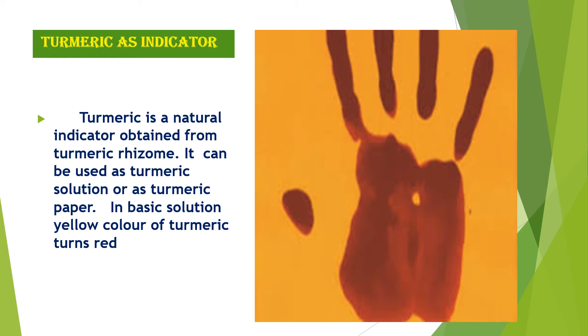In basic solution, the yellow color of turmeric turns red. This is how it indicates the presence of a base.